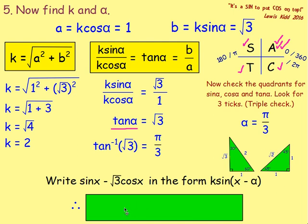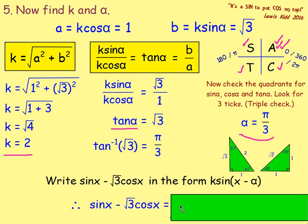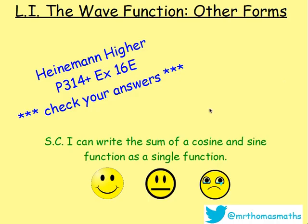Writing sin x minus root 3 cos x in that form: we have just found k equals 2 and α equals pi over 3. Substituting them in, the answer is 2 sin(x minus pi over 3). Try these questions — they are very similar to the first lesson, only with other forms, but the process is the same for each one. Good luck, and let me know if you have any problems.